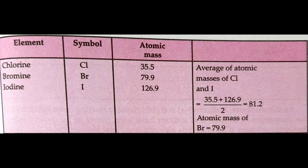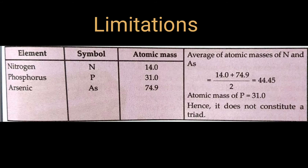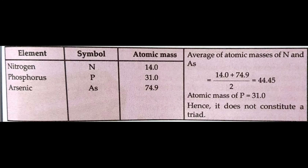Some groups of similar elements could not be classified as triads. For example, nitrogen, phosphorus, and arsenic could not form a triad because the atomic mass of the middle element phosphorus is not the average of the other two. The important drawback of Döbereiner's classification was that all known elements could not be arranged in triads — he could identify only three triads from the elements known at that time.